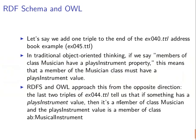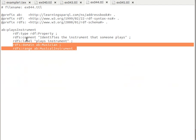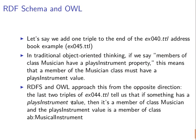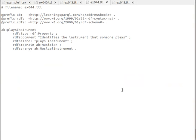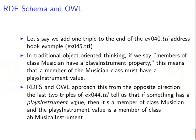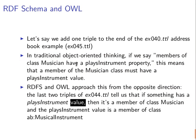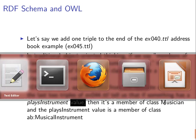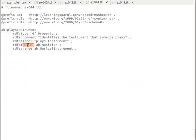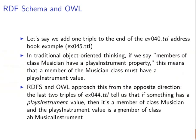When we added the 'plays instrument' property, what happens now is that if something has a 'plays instrument' property, then it's a member of class Musician. So if anything has a 'plays instrument' property, that means it is a member of class Musician. It's actually the opposite to object-oriented: in OOP, a member of a class needs to have that property automatically, whereas here, if anything has that property, that automatically means it is a member of class Musician — the class that is in the domain of the property.